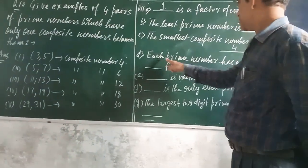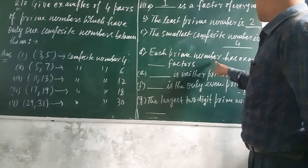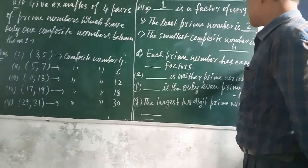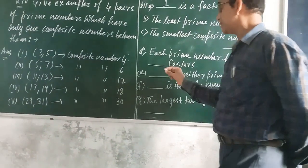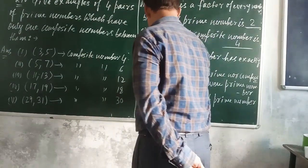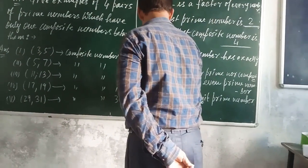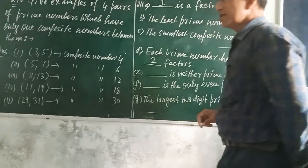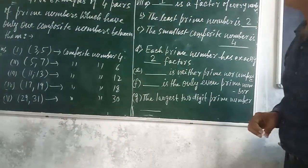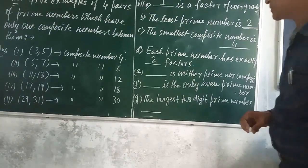Next one: each prime number has exactly Dash factors. The answer is 2 factors. Each prime number has exactly 2 factors, because it is divisible by 1 and itself only.